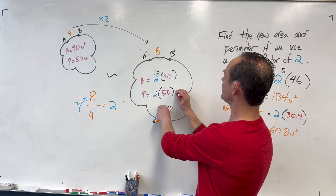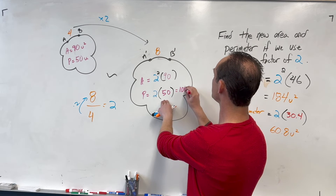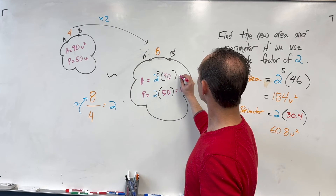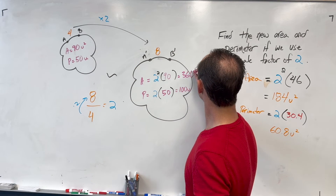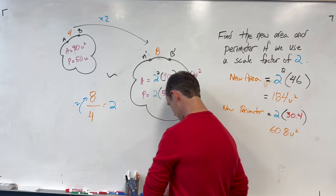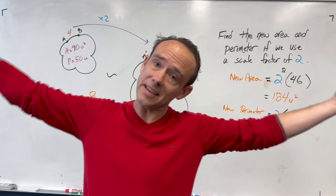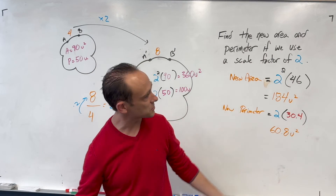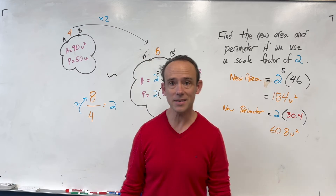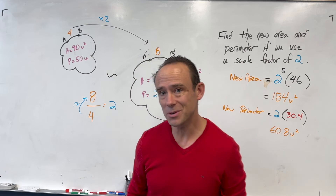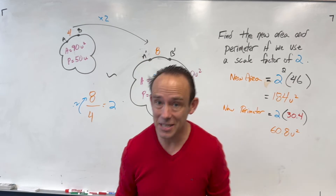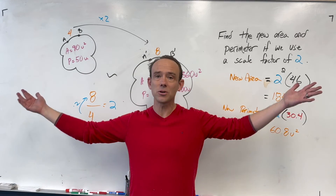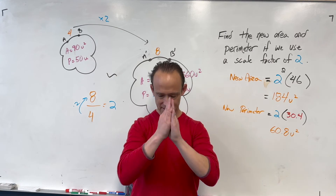New perimeter = 100 units and new area = 360 units squared. That's the journey — math is steps like this. I hope I found you in a good mood. I believe in you, and I hope you're having a beautiful day. Take care.